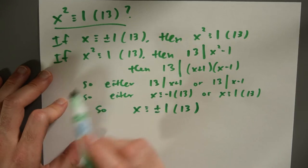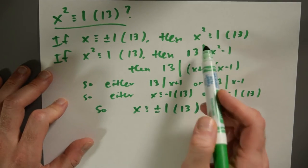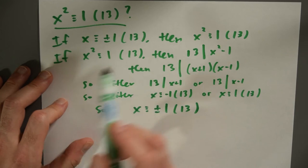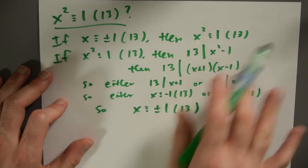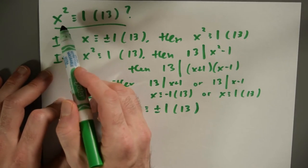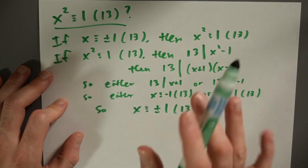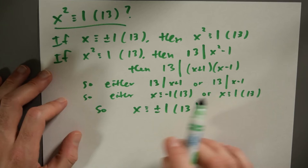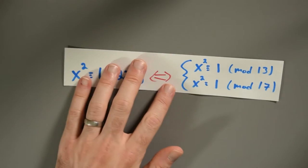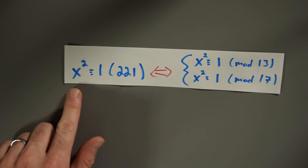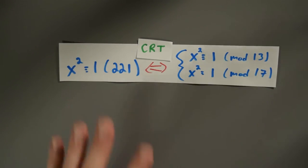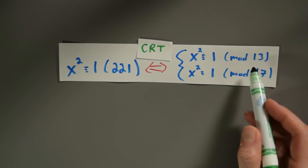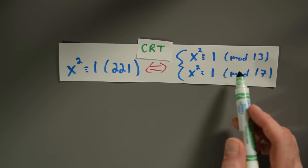So I've found all the solutions: x squared≡1 (mod 13) happens exactly when x≡±1 (mod 13). Now what does that tell us about our original question? We originally wanted to know for which x it is the case that x squared≡1 (mod 221). By the Chinese Remainder Theorem, this boils down to the two conditions, and we've just determined that x squared≡1 (mod 13) happens exactly when x≡±1 (mod 13).